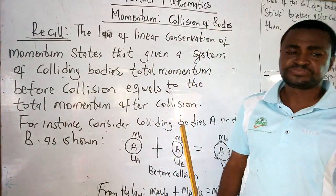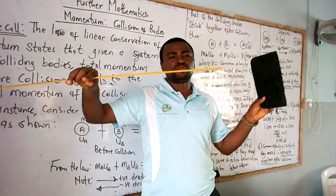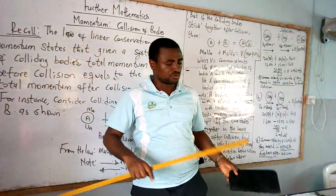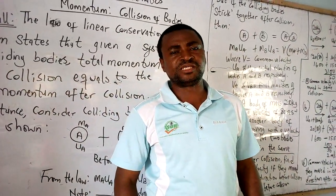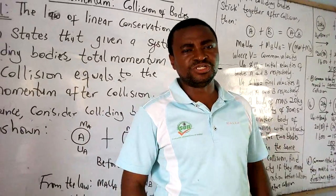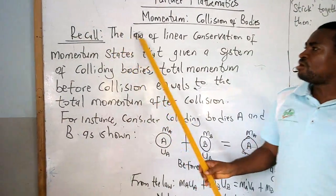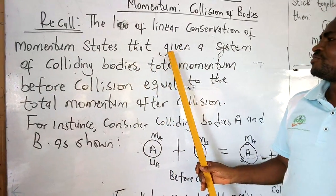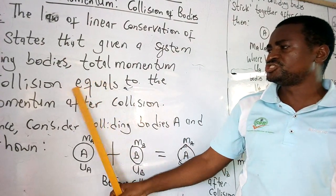We are talking about collision of bodies — one body moving in one direction colliding with another body, whether the two bodies are moving in the same direction or in the opposite direction. We have what is called elastic collision and inelastic collision. In elastic collision, the bodies move apart after collision. In inelastic collision, the bodies stick together. The law of conservation of linear momentum states that for a given system, the total momentum before collision is equal to the total momentum after collision.